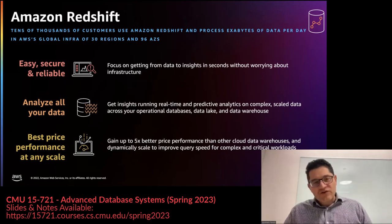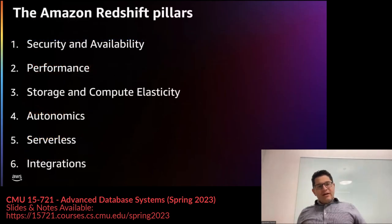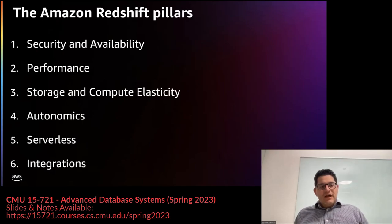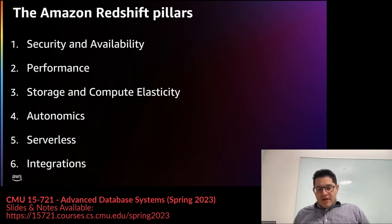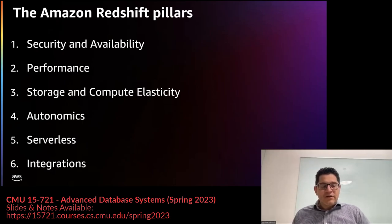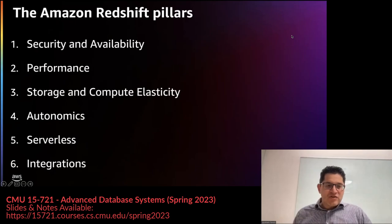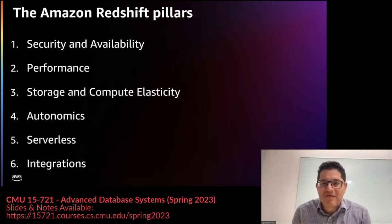Looking at any large service like Redshift, you'll see thematic areas of focus. For Redshift there are six basic areas where we put most of our energy and investment. The first one, and there's a reason I put them in this order, is security and availability. Between security and availability, which one is the most important? Can somebody answer that?